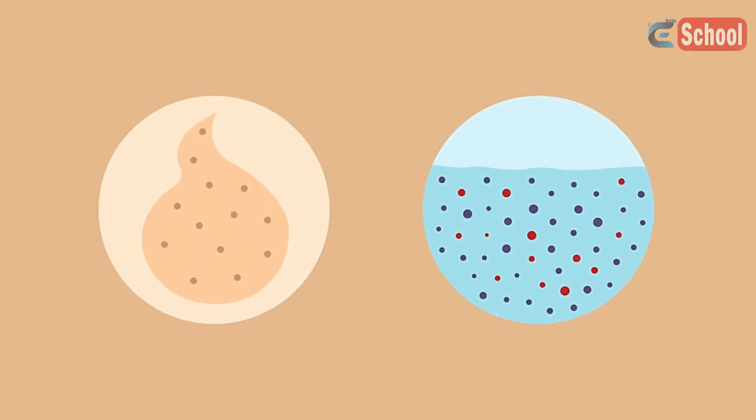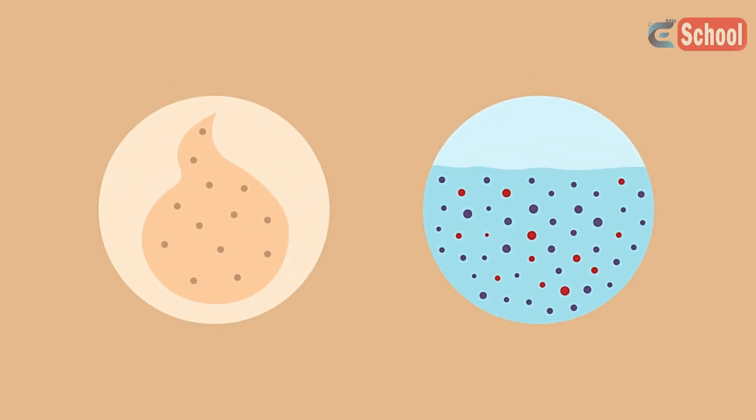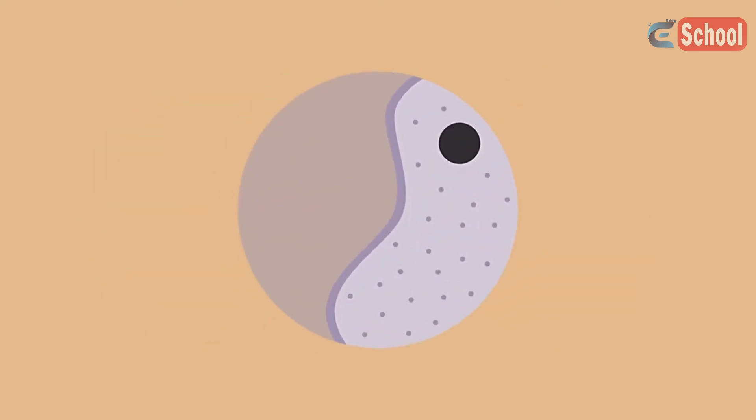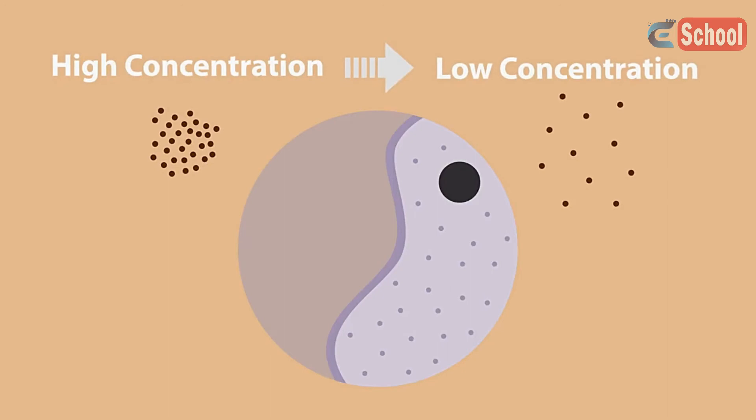For particles to move like this, they need to be a gas or particles of a dissolved substance. Diffusion is seen throughout nature and allows substances to pass into or out of cells across the cell membrane, but they must be dissolved and there must be a concentration gradient that they can move from high concentration to low concentration.